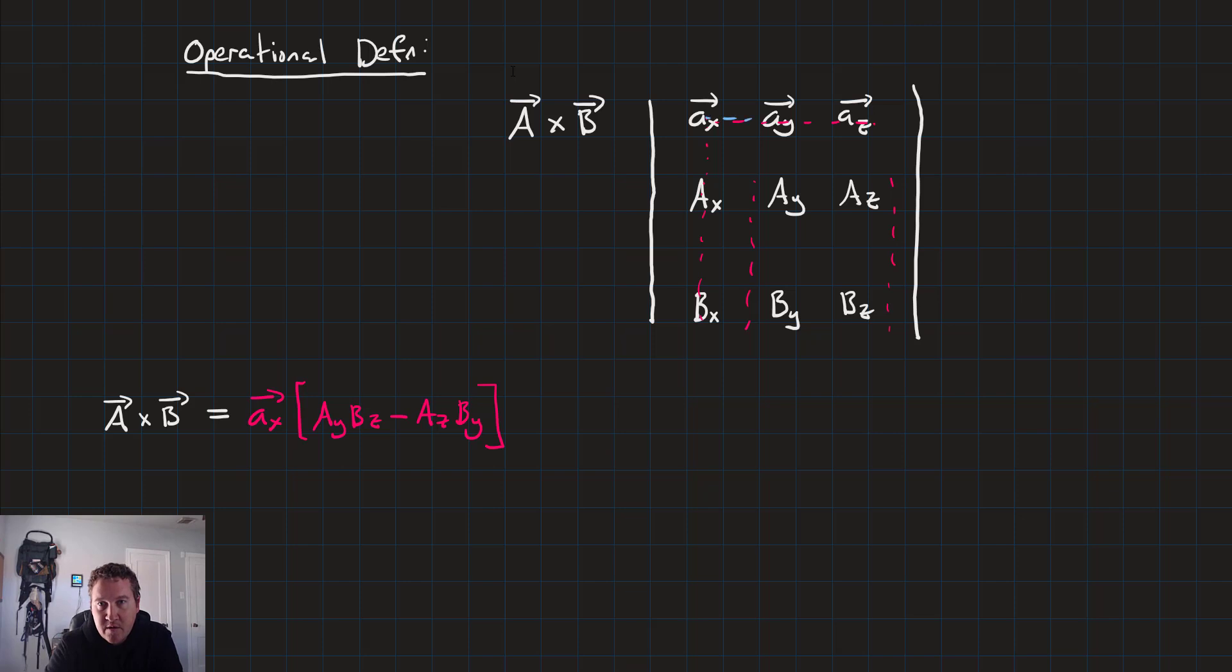And then we repeat that for the middle vector, the a sub y. That's going to be a matrix of a x, b x, and a z, b z minus, pay attention to that, there's a minus there, a sub y times a sub x times b sub z minus a sub z times b sub x.